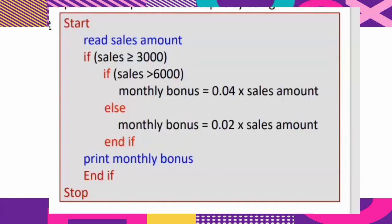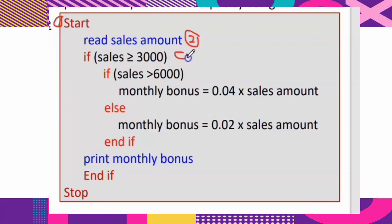Second, we write the pseudocode. As usual, start with START. Second line: write the input — READ sales amount. Based on the problem statement, the input is sales amount. For the first (outer) condition: the bonus is given when monthly sales amount reaches 3,000 ringgit, so IF sales greater than or equal to 3,000. If the outer condition is true, the computer will check the second (inner) condition.